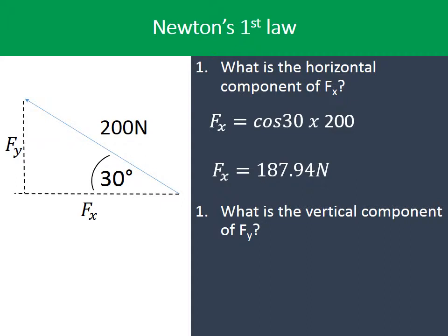And the vertical component up and down the way there, on the left hand side of the diagram, sin 30 times 200, which will give you a vertical force of 68.40 newtons.